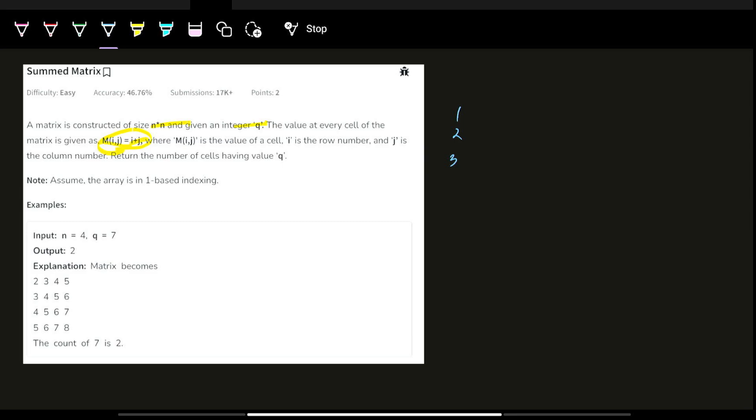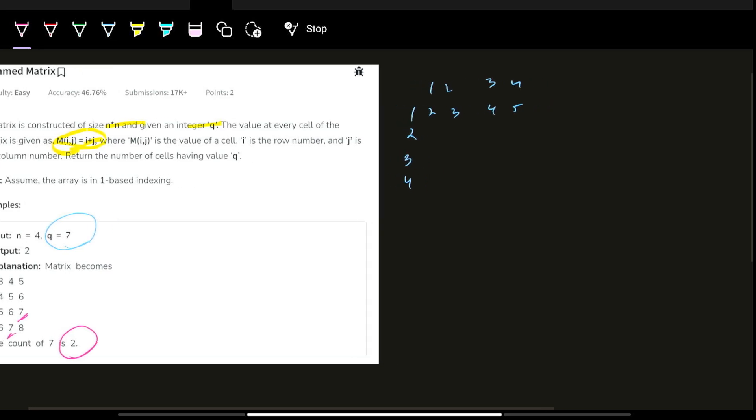So what are the possible number of cells which have the value Q? Let's say 1, 2, 3, 4 for rows and 1, 2, 3, 4 for columns. The values here would be 1 plus 1 equals 2, then 3, 4, 5 and similarly so on and so forth. What is the number of times this Q is present? I can clearly say it is present two times, right? So the answer is two.